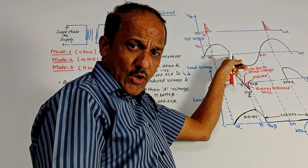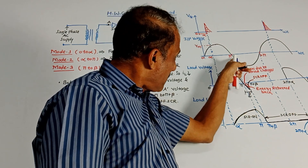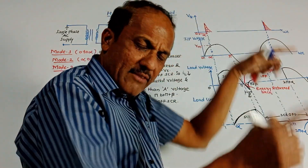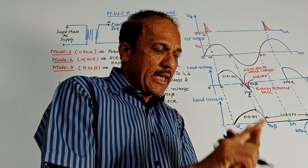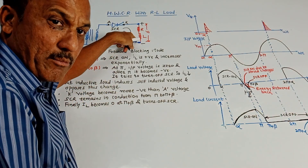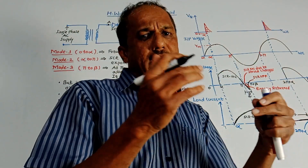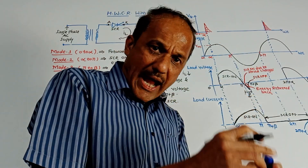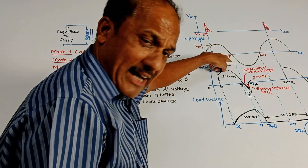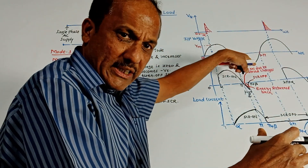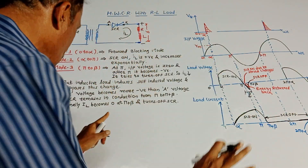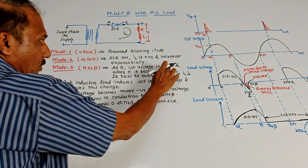At pi, the value of input voltage becomes zero. After pi — from pi to 2pi — there is a negative half cycle. So at pi, when the supply voltage becomes zero, SCR ideally should be turned off. But this is an inductive load. The important property of the inductor is to store energy and produce induced voltage. After pi, since the supply voltage becomes negative, it will try to switch off the thyristor.